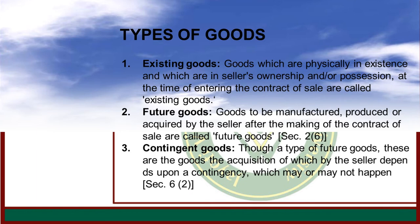Here are types of goods. First one, existing goods: goods which are physically in existence and which are in sale or ownership or position at a time of entering the contract of sale are called existing goods. Future goods: goods to be manufactured, produced, or acquired by a seller after the making of the contract of sale are called future goods. It is covered under section 2 subsection.